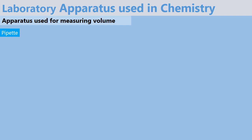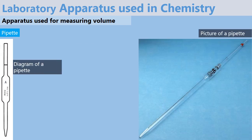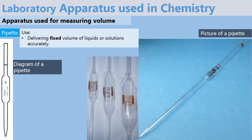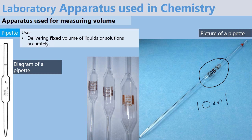Next, we have what we call a pipette. Here is a picture, a diagram, and a picture. Notice there is a certain line which we call the mark on the diagram and on the picture. This mark indicates the level of liquid or solution that should be filled in the pipette. A pipette is used for delivering a fixed volume of liquid or solutions accurately — for example, this pipette here is used for delivering exactly 10 milliliters of liquid or solutions accurately.